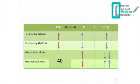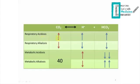Here is a table explaining the kinds of pathologies related to acid-base. We have respiratory acidosis, respiratory alkalosis, metabolic acidosis, and metabolic alkalosis. Let's go through them one by one.